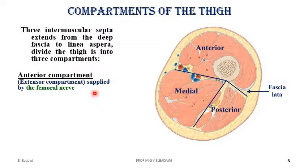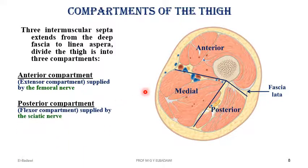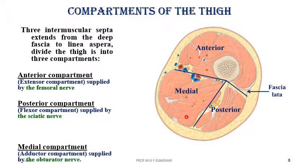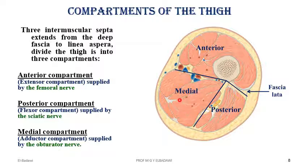The anterior compartment, which we call the extensor compartment, is supplied by the femoral nerve. While the medial compartment muscles are supplied by the obturator nerve. These are the three compartments of the thigh with their nerve supply and their functions.